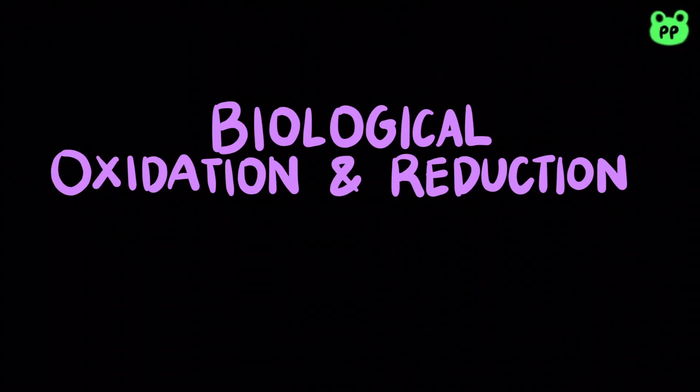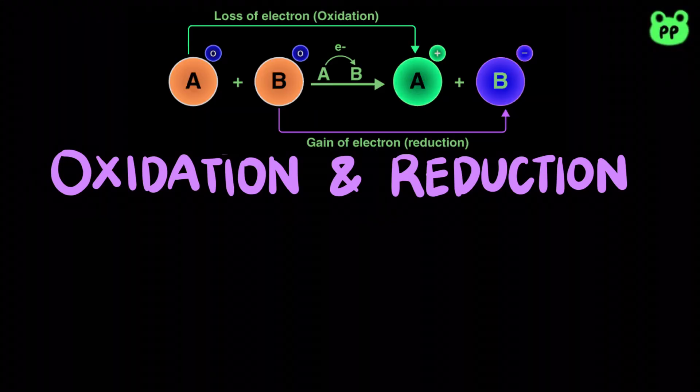A key feature of metabolism involves the transfer of electrons in oxidation-reduction reactions. Oxidation refers to the loss of electrons, whereas reduction refers to the gain of electrons.